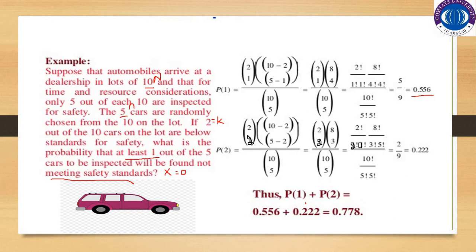So the probability that at least one out of five cars is not meeting the safety standards is P(X=1) plus P(X=2), which is equal to 0.556 plus 0.222, giving 0.778. We stop at P(X=2) because there are only two cars in the lot which are not meeting the safety standards.